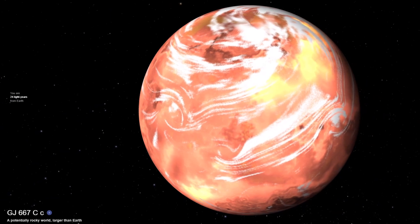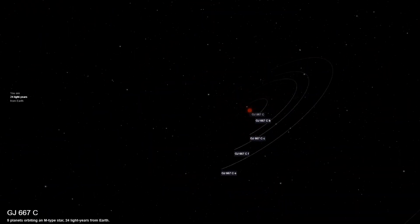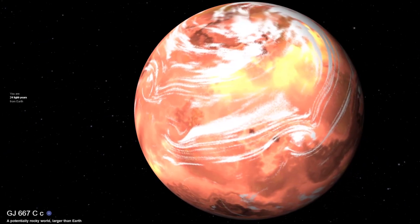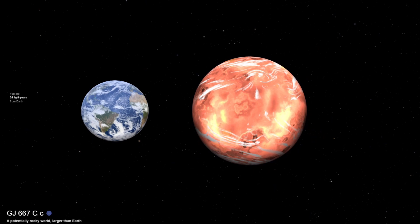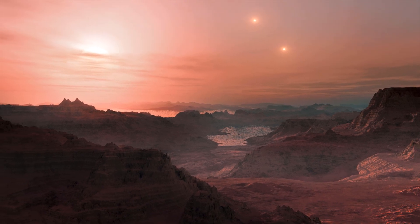Gliese 667 cc is a potentially rocky super-Earth that orbits within the habitable zone of an M-type star. It has a radius of 1.77 that of Earth, a mass of 3.8 Earths, and takes just 28 days to orbit its star. The three-star system it's contained within would look really beautiful from the planet.